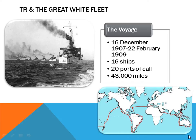When Roosevelt told Congress his plan and asked for money, they refused — too costly, too expensive. He sent them anyway. When they got to the opposite side of the globe, they ran out of money and provisions. Roosevelt went back to Congress and said the Great White Fleet was stuck on the other side of the world and he needed money to bring them home. Congress said we can't leave 16 naval ships filled with crew on the other side of the world, so they coughed up the money.